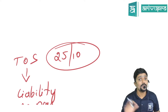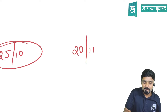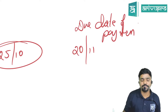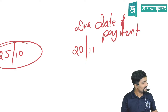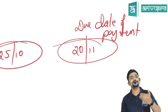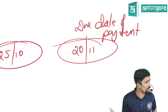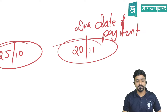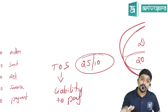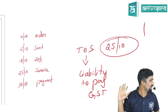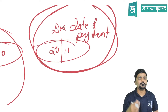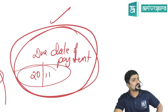Time of Supply helps you decide on what day you are supposed to pay GST to the government. If you delay beyond 20th November, from 21st November interest will start — you have to pay, but along with interest. In this chapter we will not be learning about that. Students often get confused that Time of Supply itself is the due date for payment — it is not. In the payment chapter and returns chapter, we will learn what the due date for payment is.